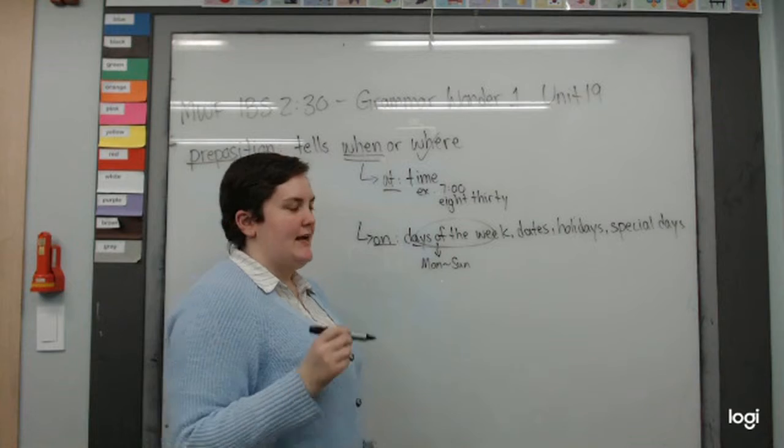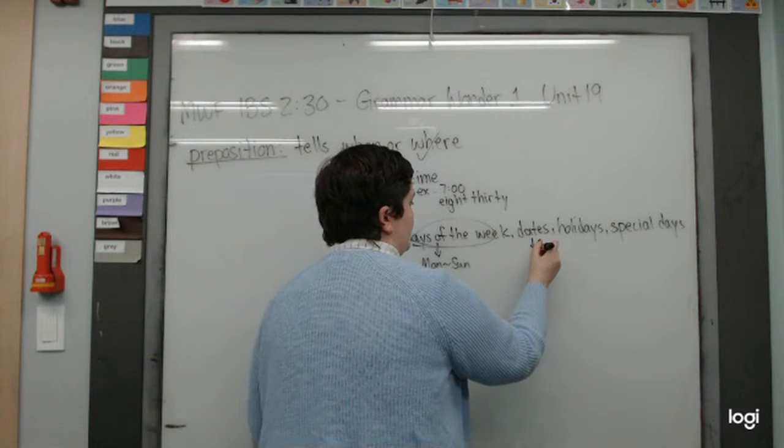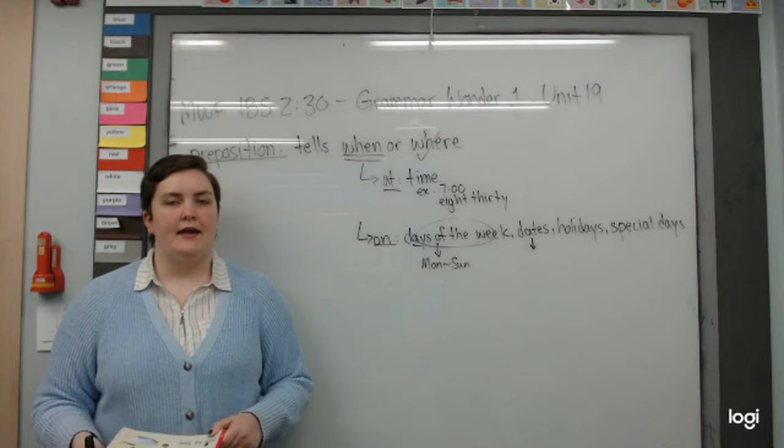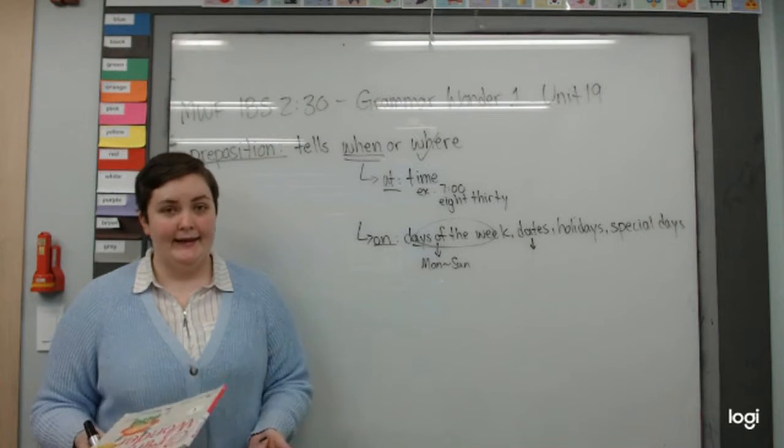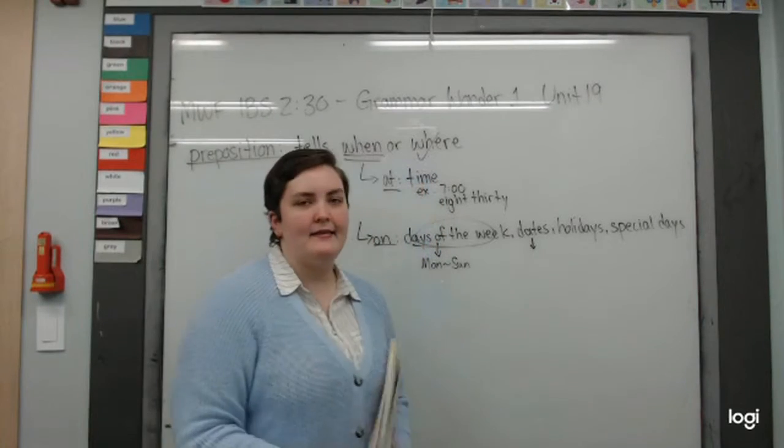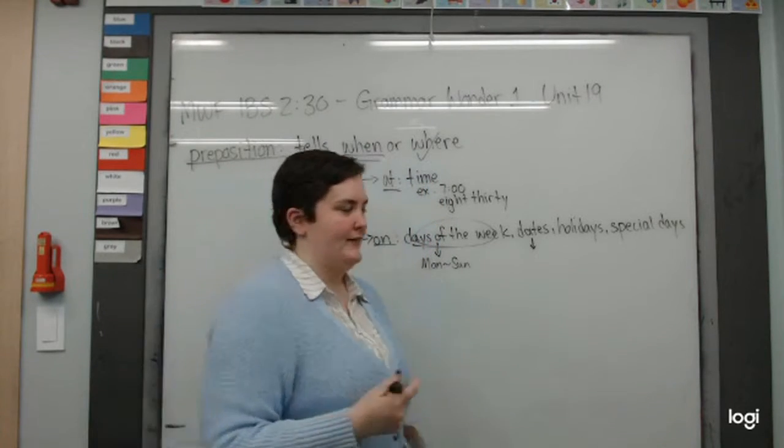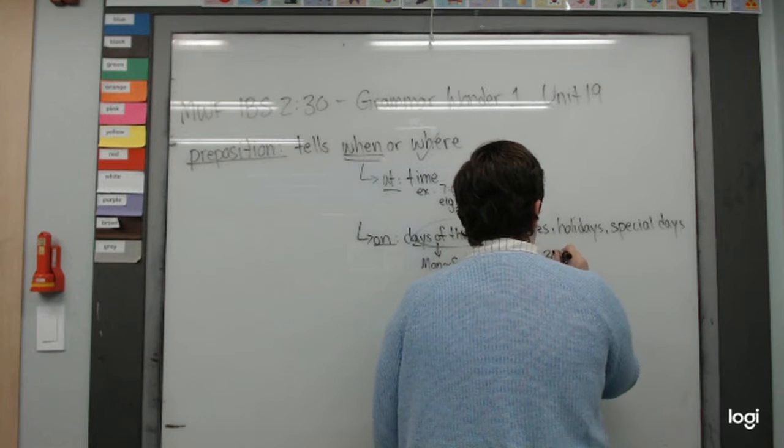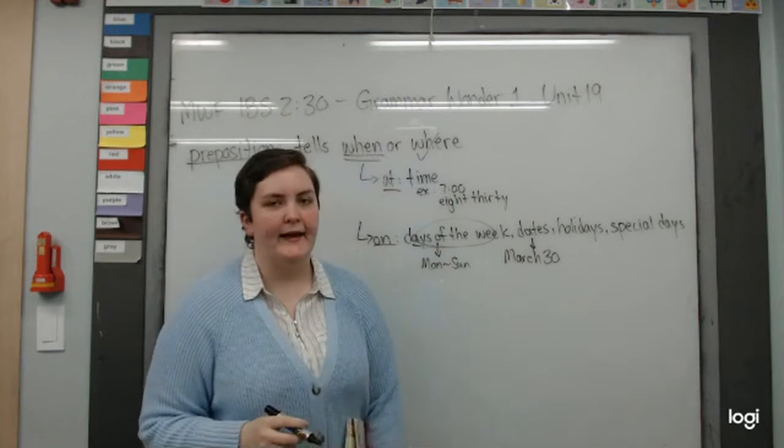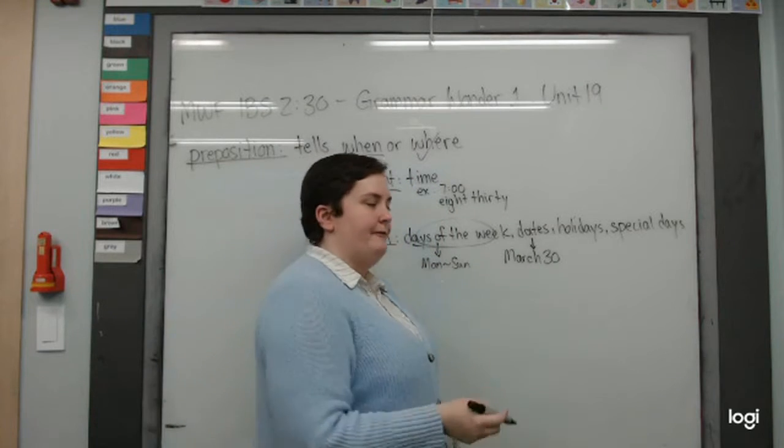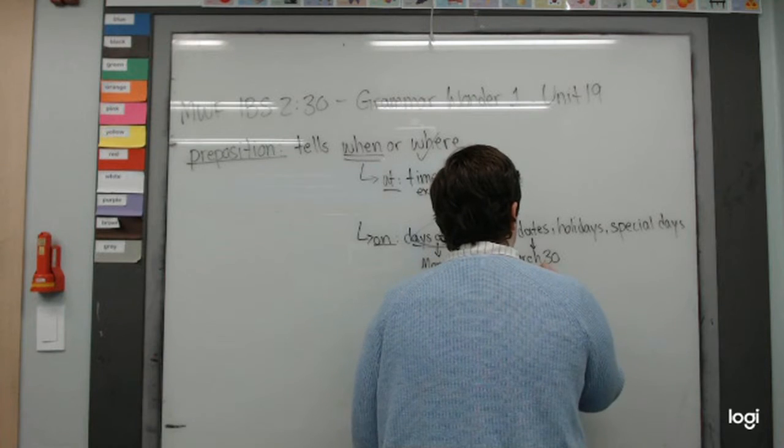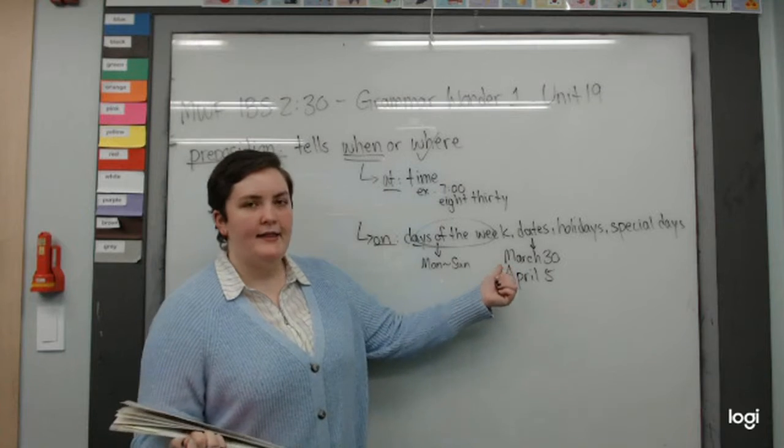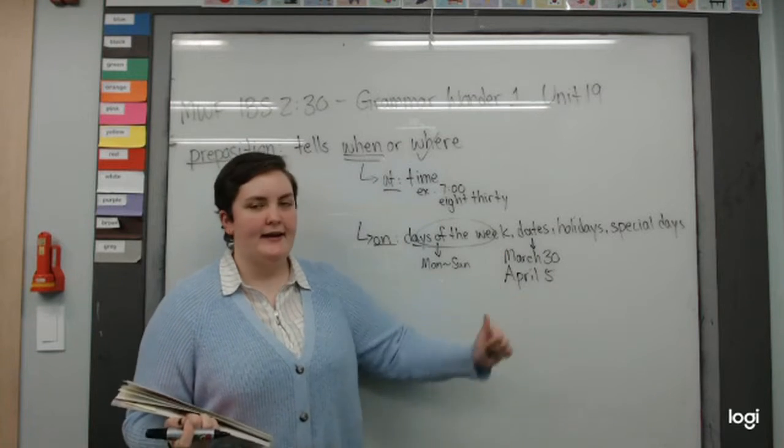Then we have dates. A date means when you say the month and the number. So today is March 30th, or we can say on April 5th. We give the month and the number. That is date.